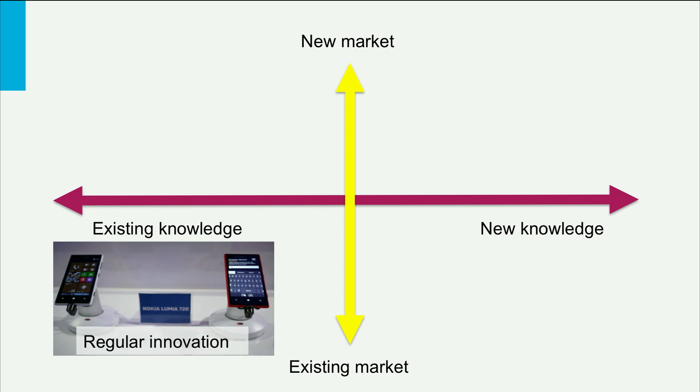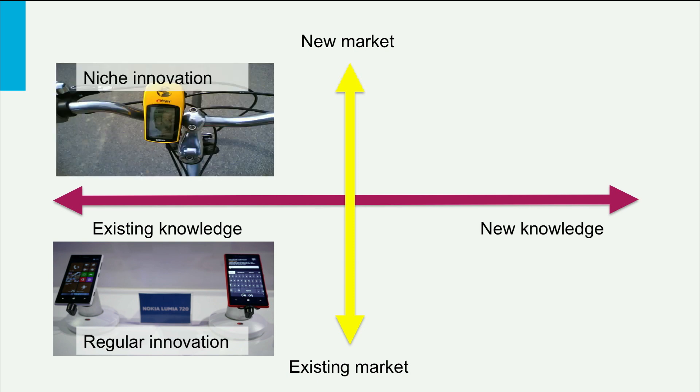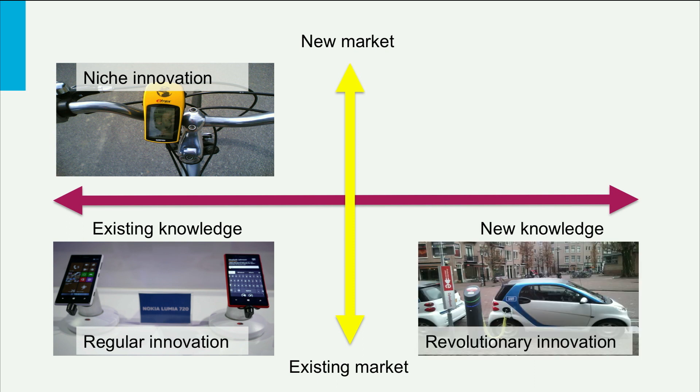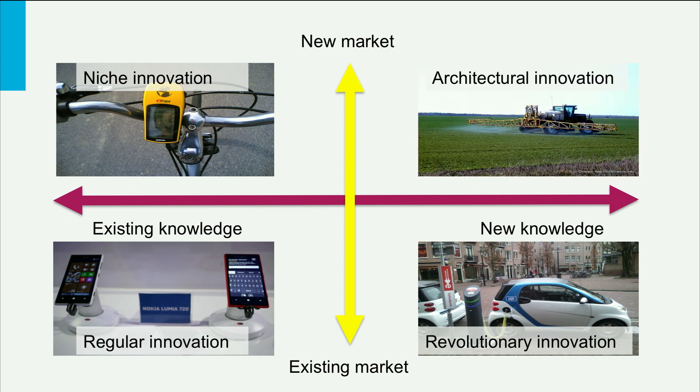A second type of innovation is niche innovation, which builds on existing knowledge but reaches out to new customers or new markets. A typical example is a GPS device for cycling. Revolutionary innovation, the third type, is aimed at existing customers but based on new knowledge — an example is electric cars. And then we have the fourth type, architectural innovation, based on both new knowledge and opening up new markets. An example is fertilizers and agricultural mechanization.